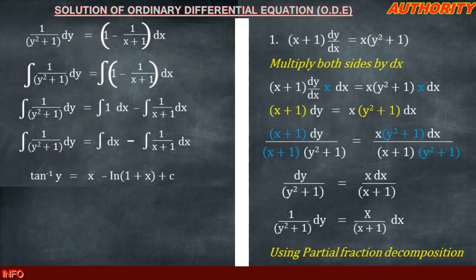When we integrate the left hand side, the integral of 1/(y² + 1) dy gives us tan⁻¹(y). On the right hand side, integrating dx gives us x, and integrating 1/(x + 1) with respect to x gives us ln|1 + x|. So we have tan⁻¹(y) = x − ln|1 + x| + C.